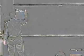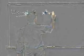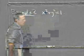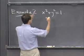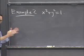The next example, I'll keep it relatively simple. So we have example two, which is going to be the function x squared plus y squared is equal to 1. Well, that's not really a function. This, again, is a way of defining y as a function of x implicitly.